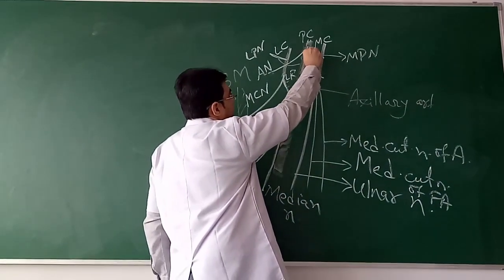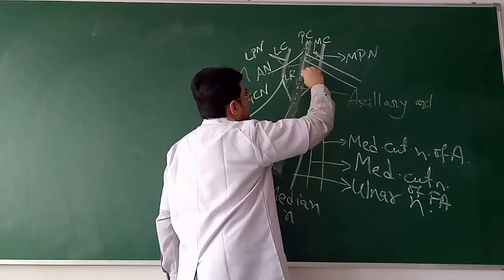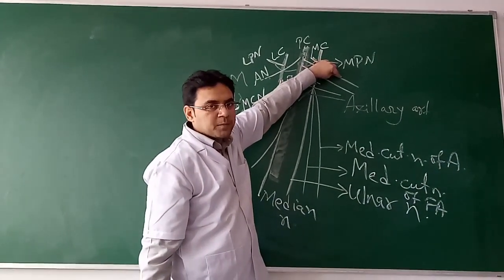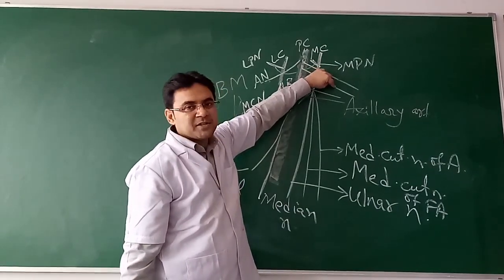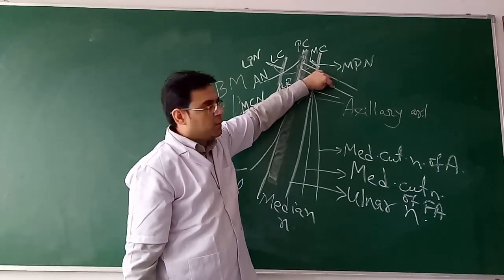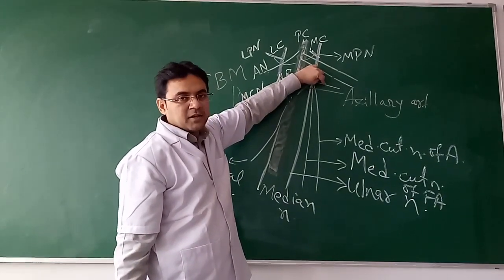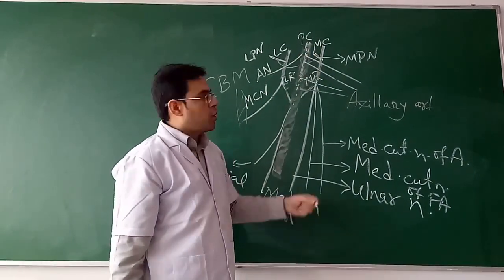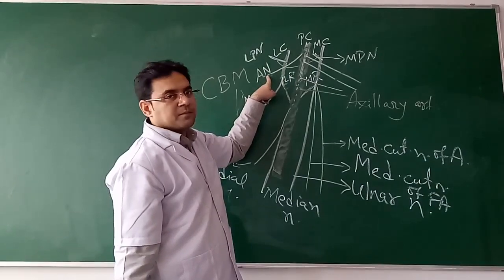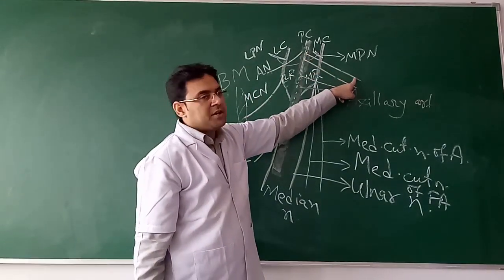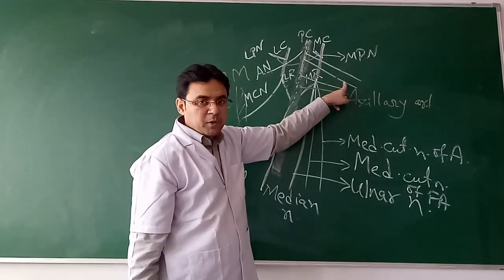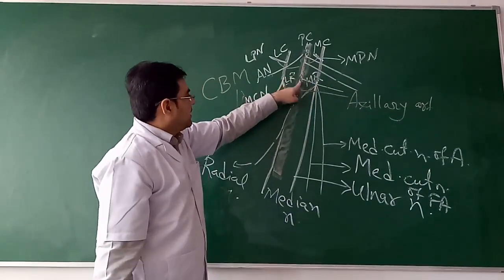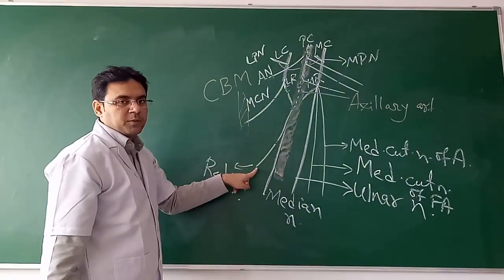On the medial side, the posterior cord gives the other nerves: namely the upper subscapular nerve, the thoracodorsal nerve which is the nerve to latissimus dorsi, and the lower subscapular nerve. So there are a total of five branches of the posterior cord: the axillary nerve, upper subscapular nerve, lower subscapular nerve, thoracodorsal nerve, and the radial nerve.